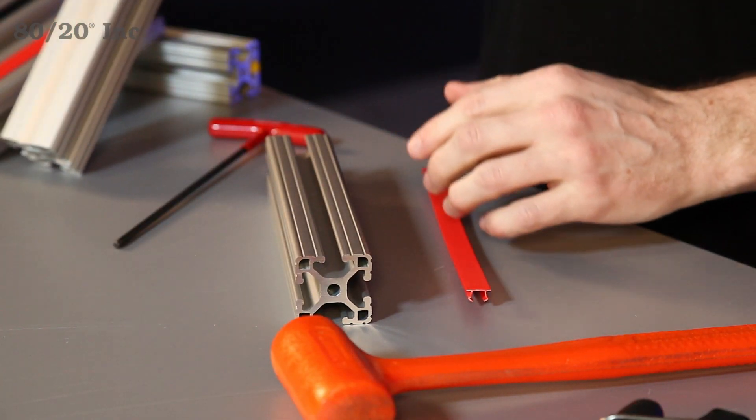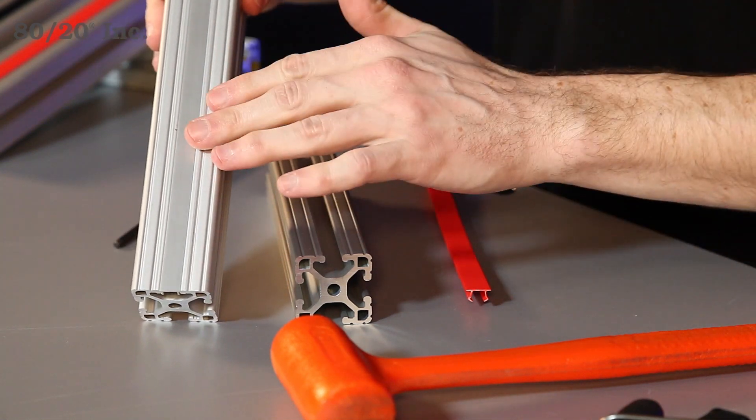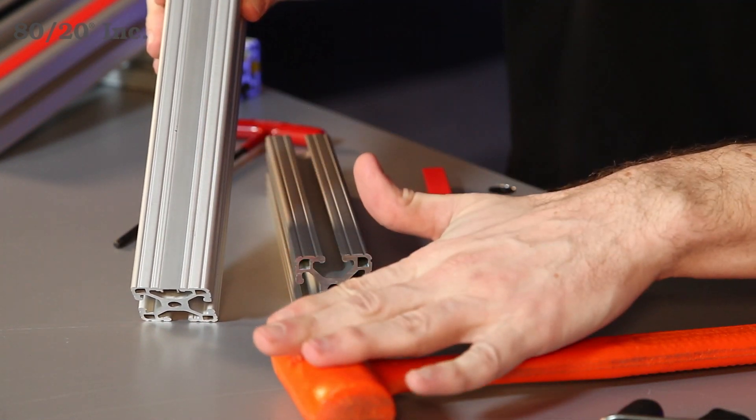Now, one other style we want to talk about is our aluminum style. Installs the same way, except you may want to use a soft base mallet to pop it into place.